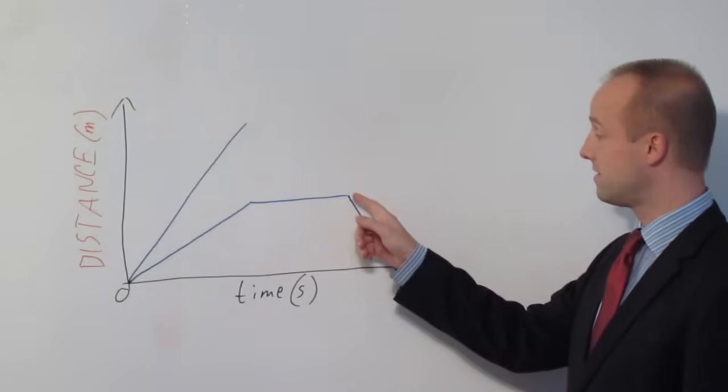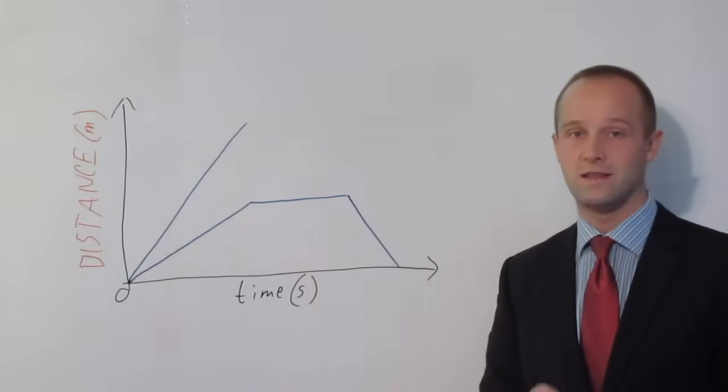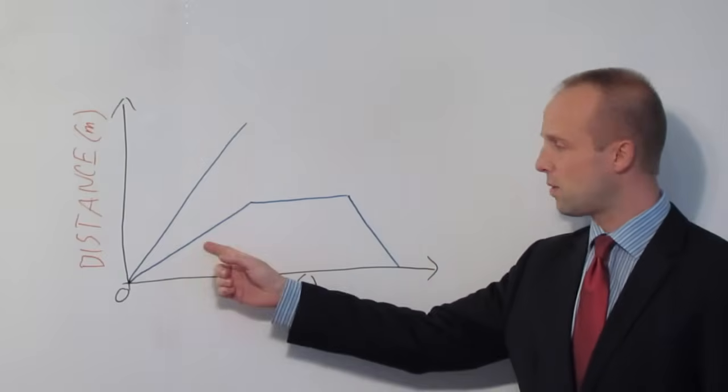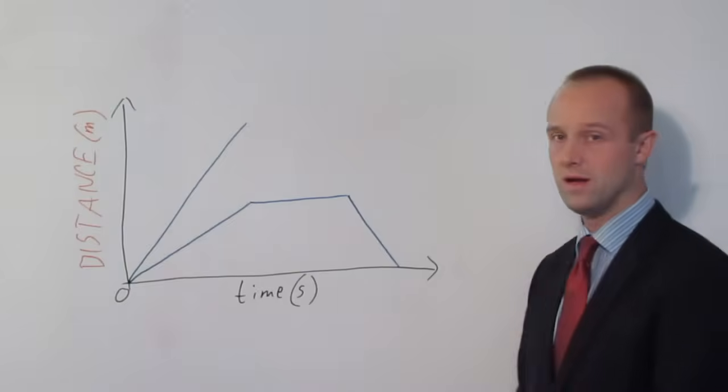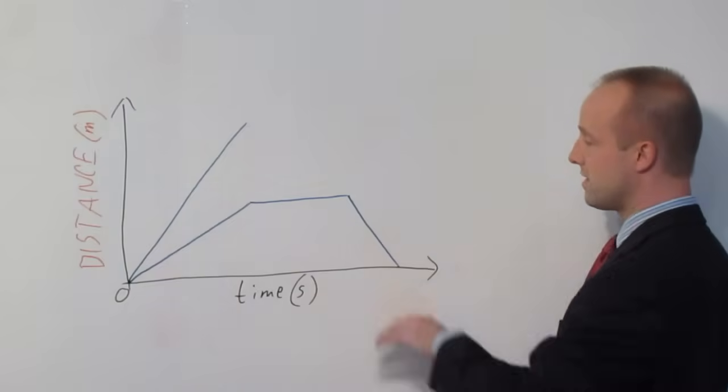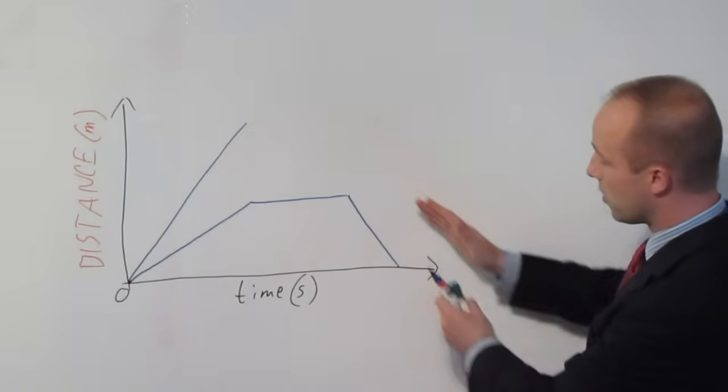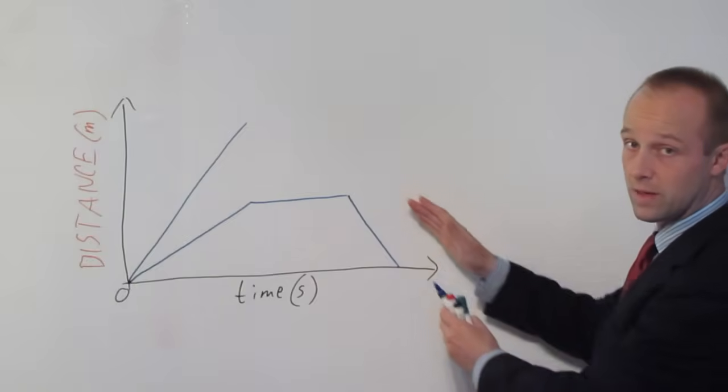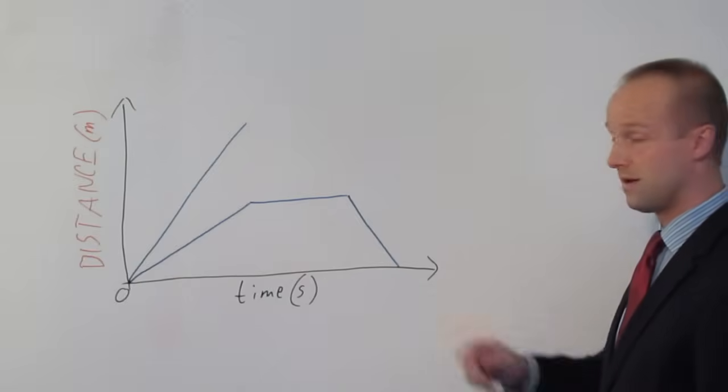So if the line is sloping back downwards like this, that object is reversing. This is what we call a positive gradient, by the way, when the line is sloping that way. That's zero gradient. And this one here, that's what we call a negative gradient, when the line is sloping down back towards the zero line here.